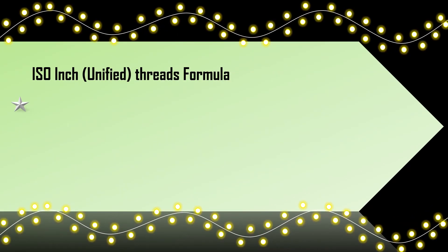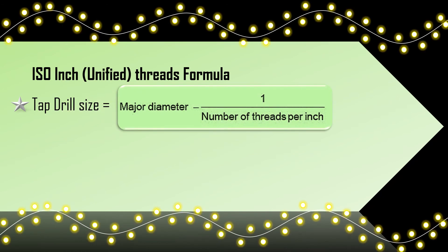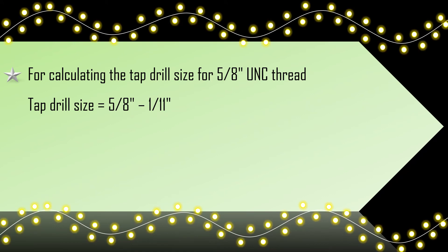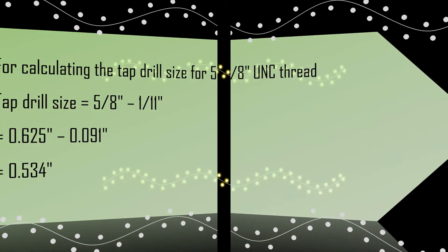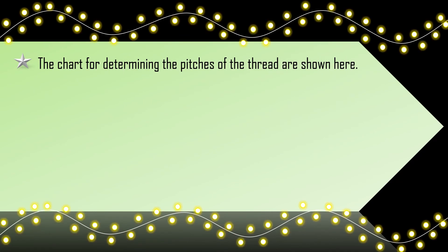ISO inch unified threads formula is: Tap drill size equals major diameter minus 1 divided by number of threads per inch. For calculating the tap drill size for 5/8 inches UNC thread: Tap drill size equals 5/8 inches minus 1/11 inches, equals 0.625 inches minus 0.091 inches, equals 0.534 inches. The chart for determining the pitches of the thread are shown here.